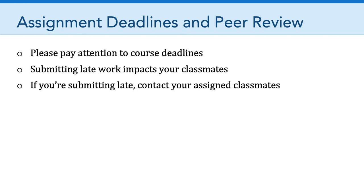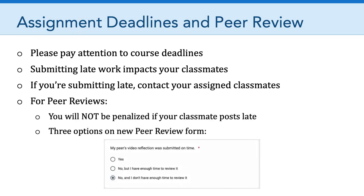To address this issue, I've decided to make some changes. For the peer reviews, you will not be penalized if your assigned classmate has not posted — that's no fault of yours, so there's nothing you can do about it. You won't lose credit. To operationalize this, I've added three options to the peer review form. The peer review form now uses skip logic and asks, after you select who you're reviewing, whether your peer's video reflection was submitted on time. You can answer yes and move on. Or you can answer no, but I have enough time to review it, and it will take you to the next section. The third, and really the new option, is no, and I don't have enough time to review it. This will indicate to me that you tried to peer review your classmate's critical reflection, but it wasn't posted on time and you're not able to complete your peer review. So now you have more options for managing peer review. Feel free to reach out to me if you have any questions.